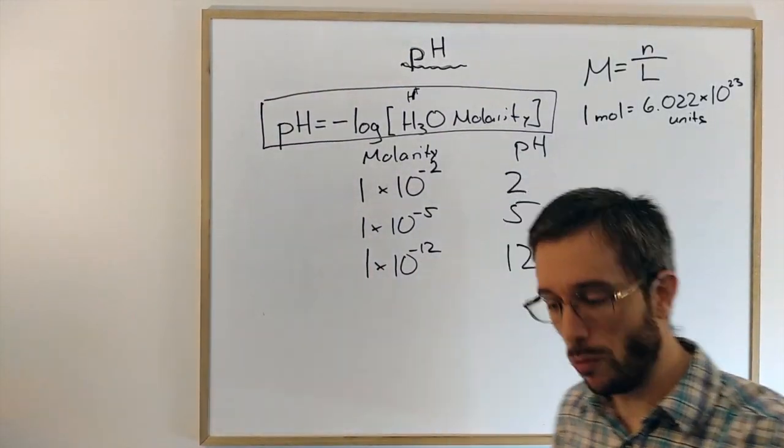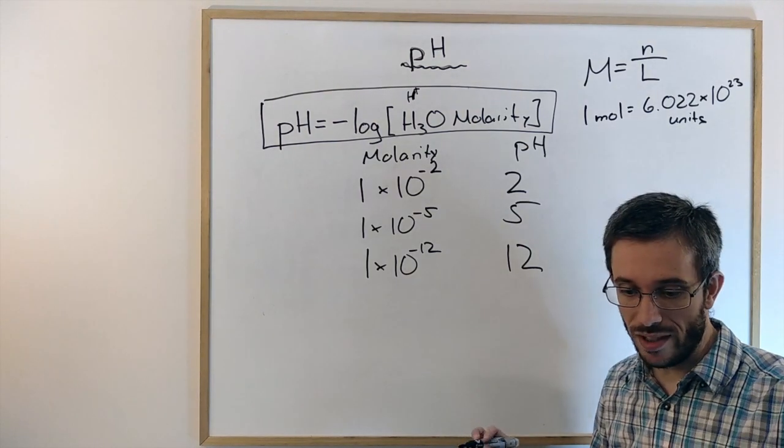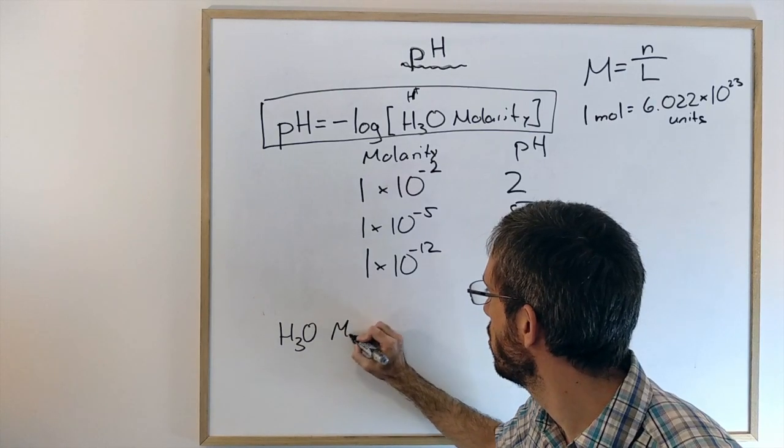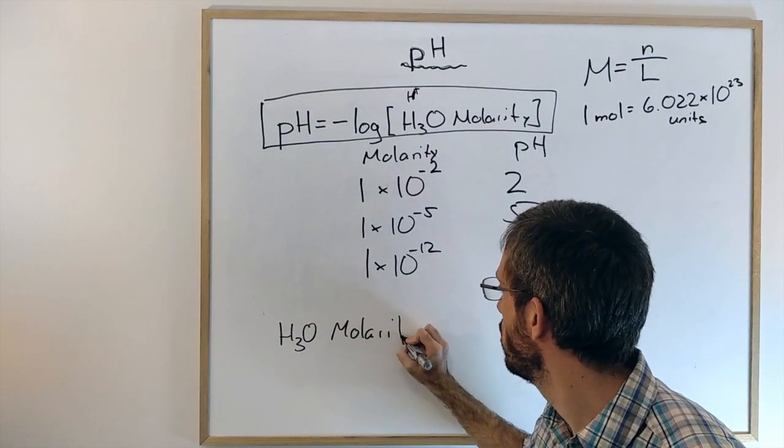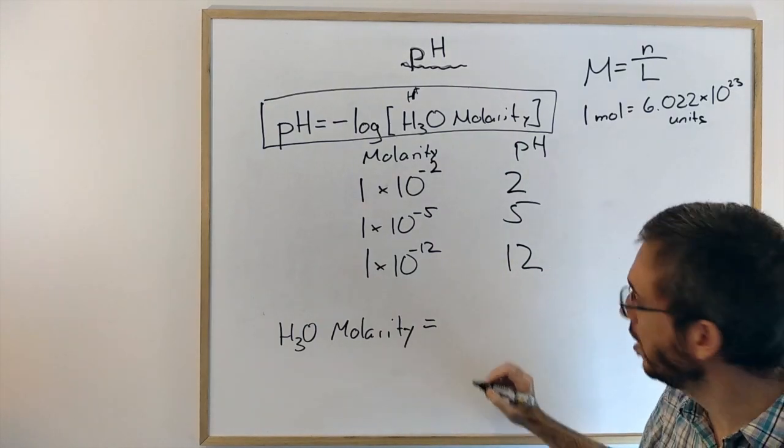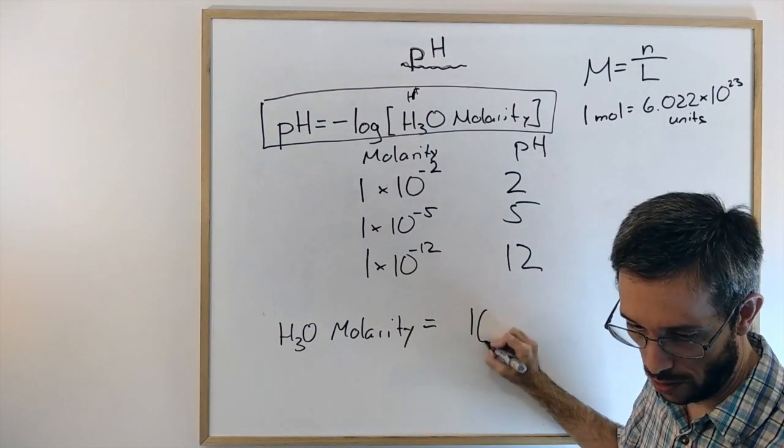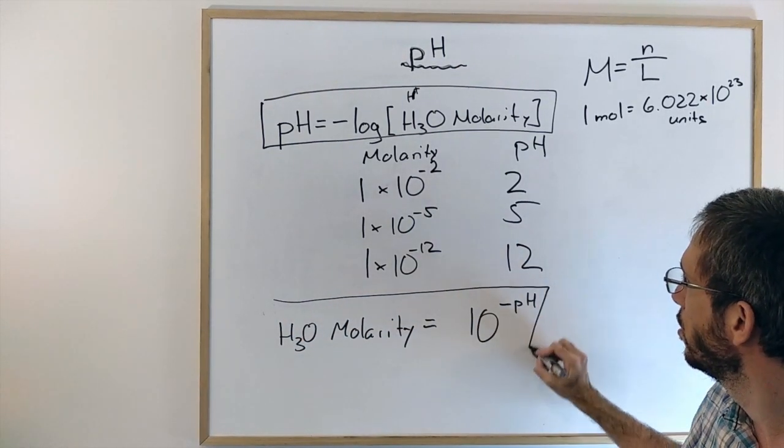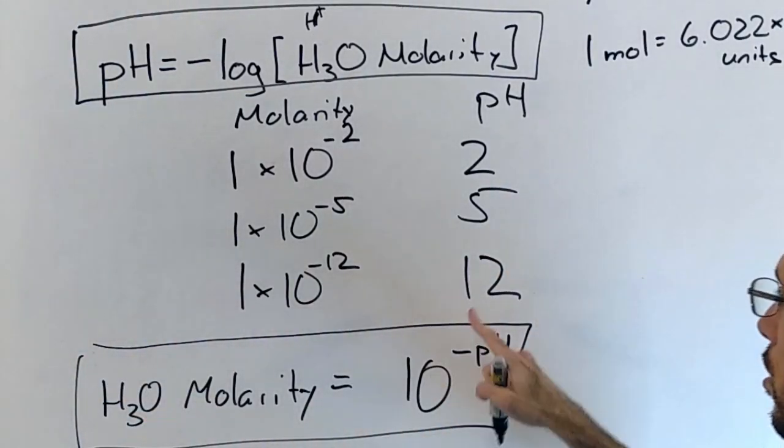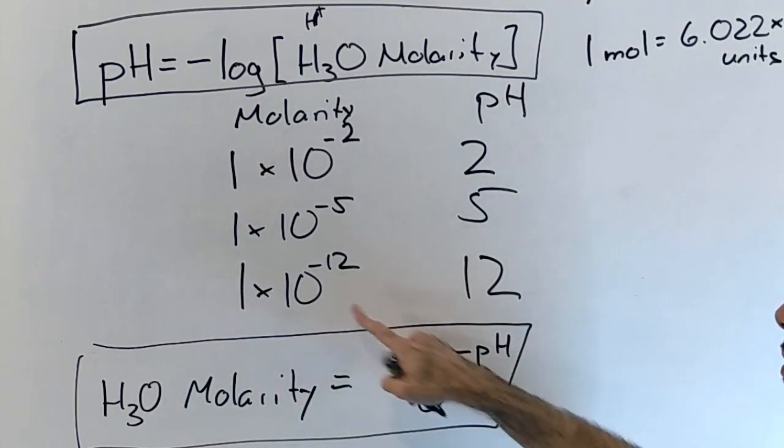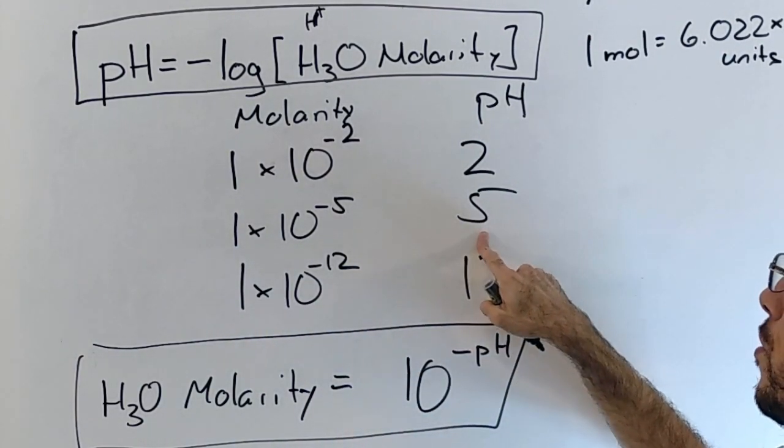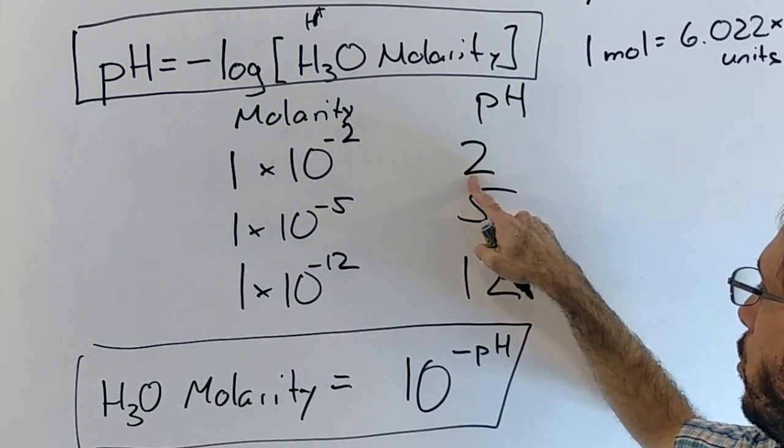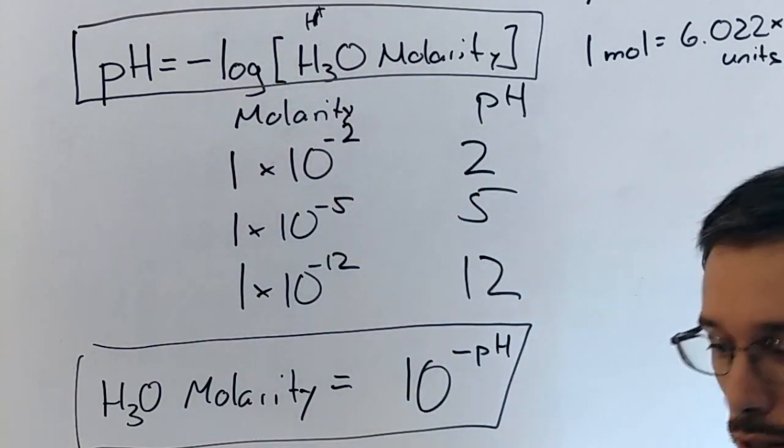Sometimes you also want to calculate the other way around. The other way around is even simpler. You can get your H3O molarity by simply taking 10 to minus the pH value. So if you have a pH of 12, 10 to minus 12 is your molarity. If you have a pH of 5, 10 to minus 5 is your molarity. And if you have a pH of 2, 10 to minus 2 is your molarity.